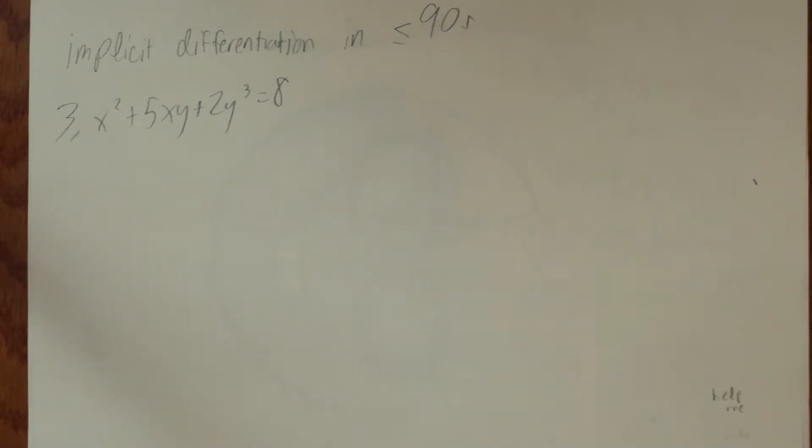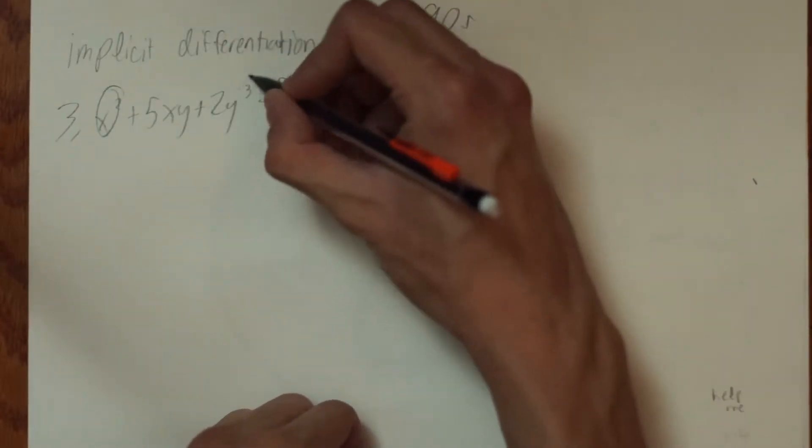The first thing you have to do is find the derivative of all terms that you can using the power rule. In this case, the terms are x squared and 2y cubed.